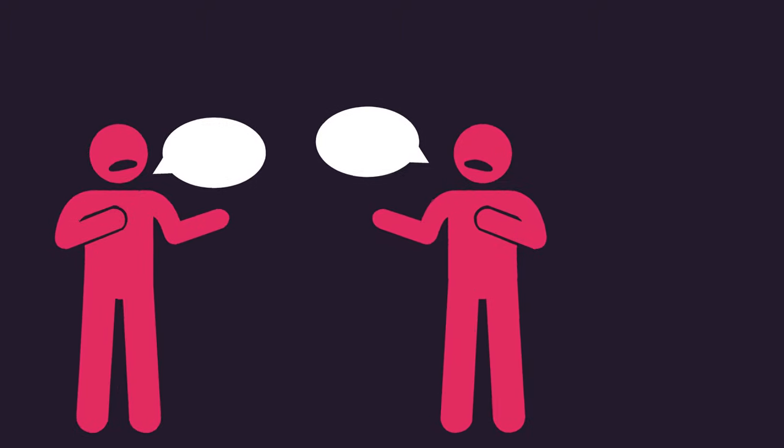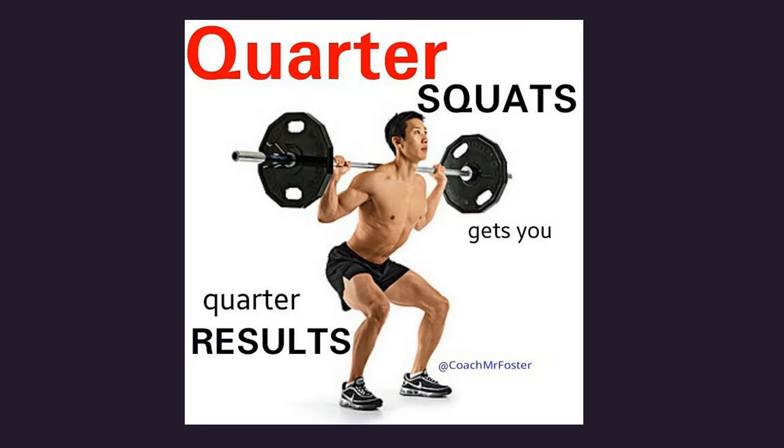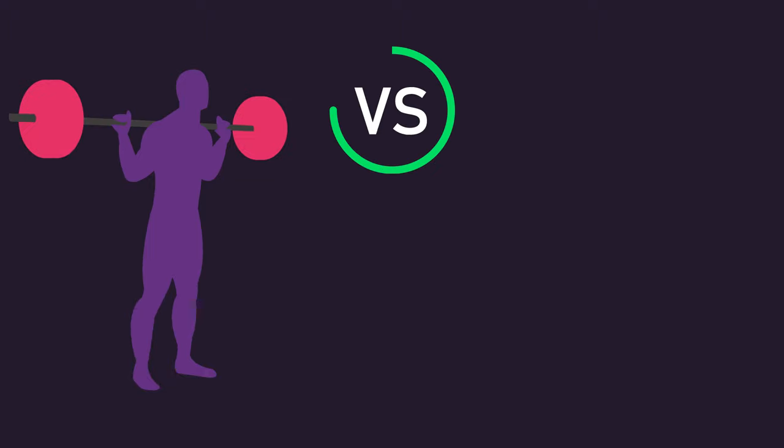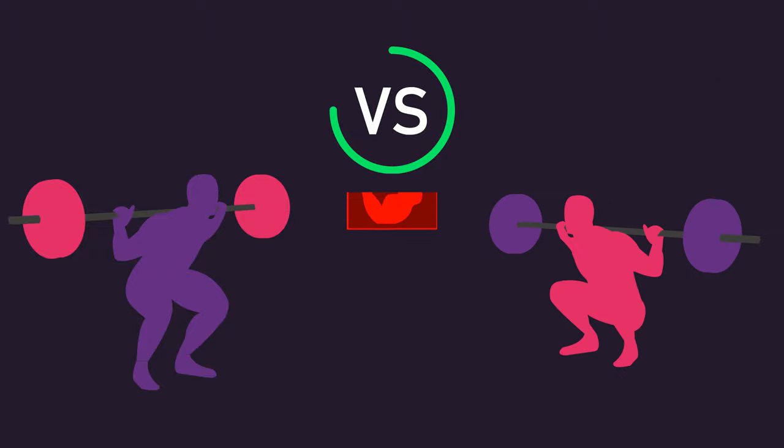It's easy to come across opinions supporting either side. One side suggests partial range of motion squats maximize the adaptations you experience, while the other side may suggest you're leaving gains on the table by not performing full range of motion squats. In this video, I'll detail the current literature comparing partial range of motion squats, defined as squats above parallel, to deeper range of motion squats for hypertrophy, strength, and athletic outcomes.